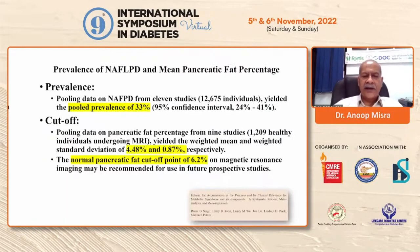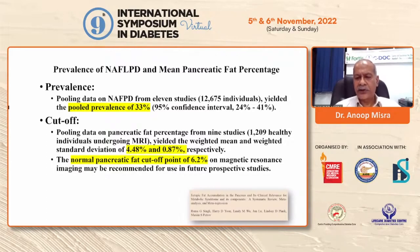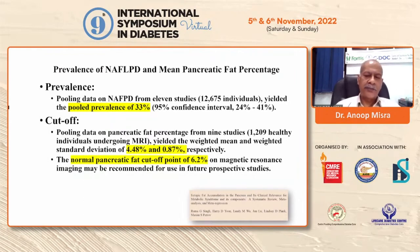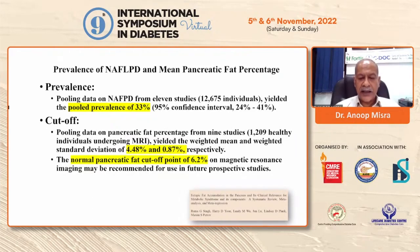What is the prevalence of NAFPD? This subject is nascent and there is not much data, with hardly any data from India. Pooling data from 11 studies of 12,000 individuals yielded a pooled prevalence of 33 percent — essentially similar to the prevalence of non-alcoholic fatty liver disease. What is the cutoff for normal pancreatic fat percentage?